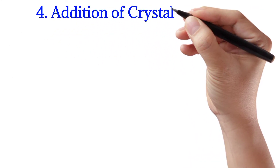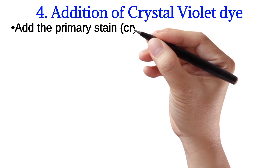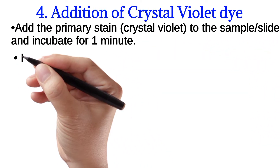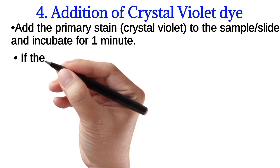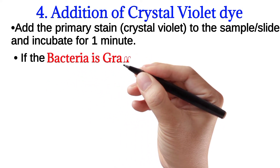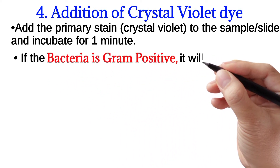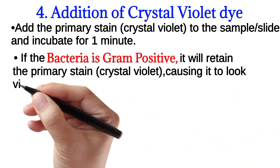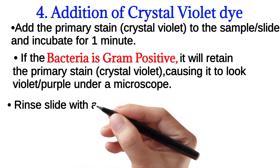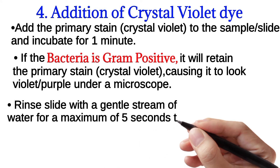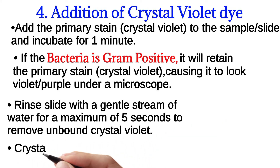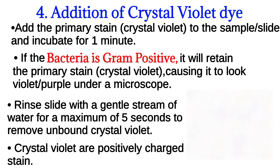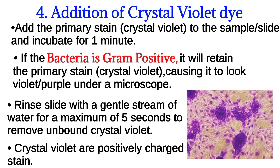Addition of crystal violet dye. Add the primary stain crystal violet to the sample or slide and incubate for one minute. If the bacteria is Gram positive, it will retain the primary stain crystal violet, causing it to look violet-purple under a microscope. Rinse the slide with a gentle stream of water for a maximum of 5 seconds to remove unbound crystal violet. Crystal violet is a positively charged stain, as shown in the picture.